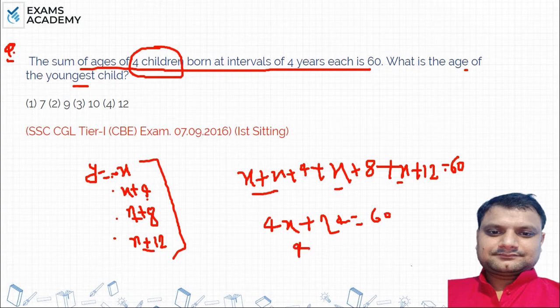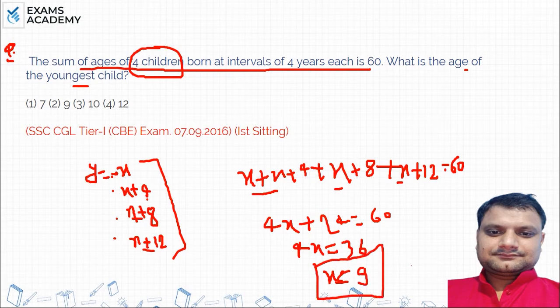So x is equal to 9. x equals 9 years. So what was the youngest child? x equals 9, so your answer will be 9.